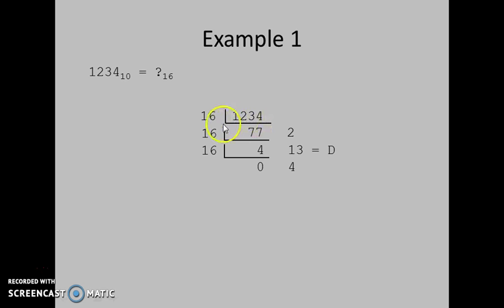So 1234 divided by 16 is 77 with remainder 2. 77 divided by 16 is 4 with remainder 13, and 4 divided by 16 is 0 with remainder 4.